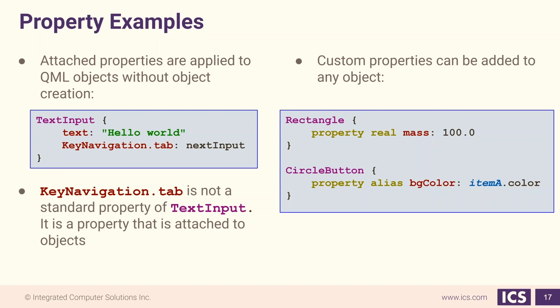If you want to access the property of a child in this manner, you have to use the special type alias. This can be seen with the circle button where the circle button's bgColor is bound to itemA's color property.